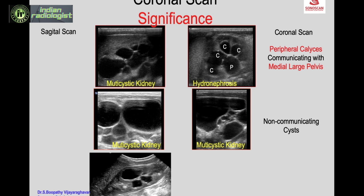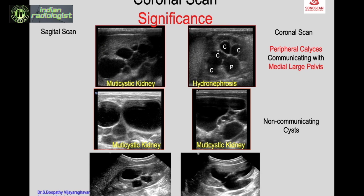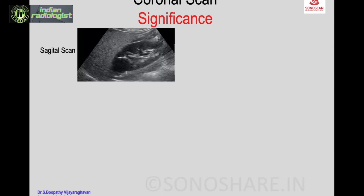Another example: you see multiple cysts in the lower half of the kidney on sagittal scan, but on coronal scan the upper half is normal, while the lower half shows peripheral dilated calyces communicating with the medially placed renal pelvis continuing as the ureter. This makes the diagnosis of hydronephrosis of the lower moiety in a double collecting system with the upper moiety being normal — a diagnosis possible only on coronal scan.